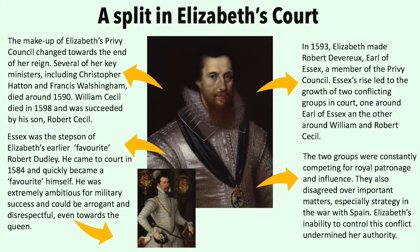Essex led to the growth of two conflicting groups in court — one around the Earl of Essex and the other around William and Robert Cecil. Essex was the stepson of Elizabeth's earlier favourite, Robert Dudley. He came to court in 1584 and quickly became a favourite himself. He was extremely ambitious for military success and could be arrogant and disrespectful, even towards the Queen. The two groups were constantly competing for royal patronage and influence, and disagreed over important matters, especially strategy in the war with Spain. Elizabeth's inability to control this conflict undermined her authority.